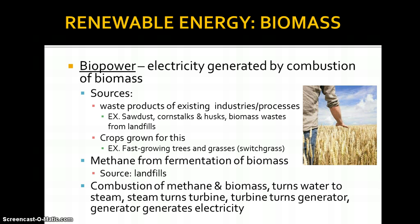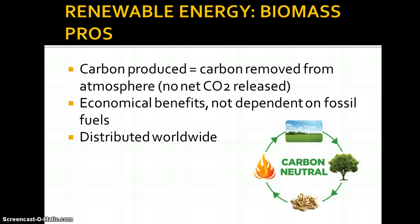The combustion of methane and biomass turns water to steam, steam turns a turbine, the turbine turns a generator, and generates electricity. We know it's not very efficient because of all those energy transfers that have to happen along the way. But methane, which is a greenhouse gas, is not going out into the atmosphere at that point — it's being used to provide electricity. So we're finding a little bit more use for our waste products.